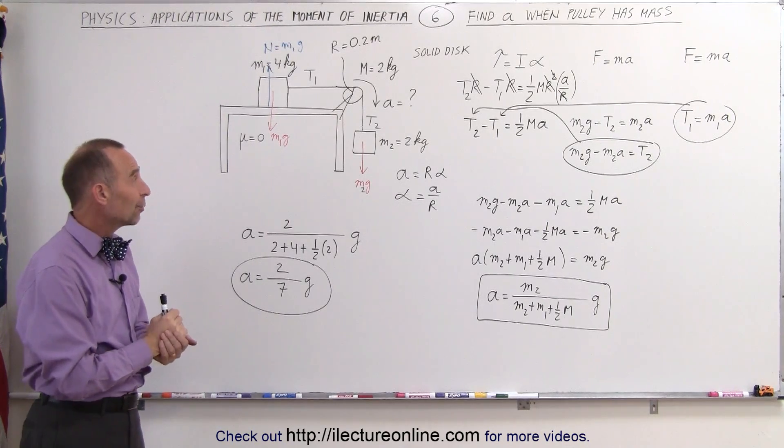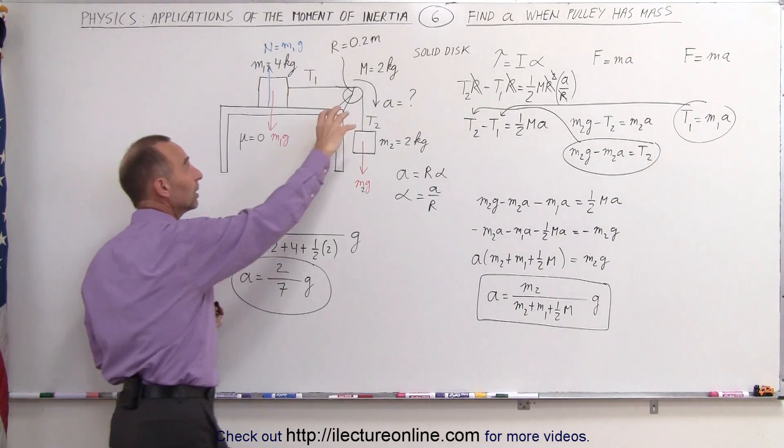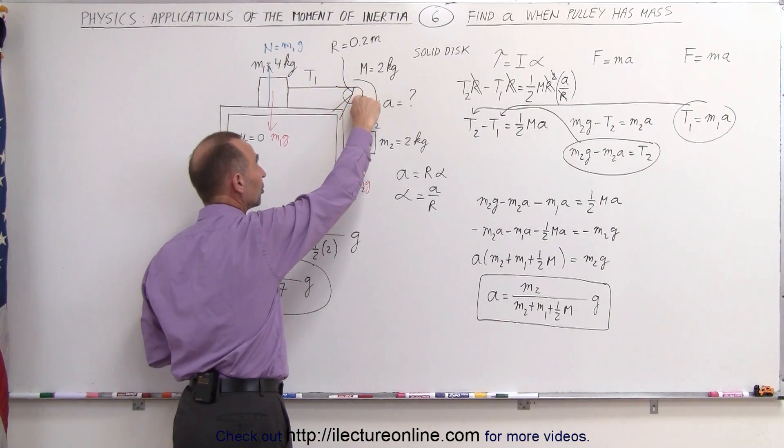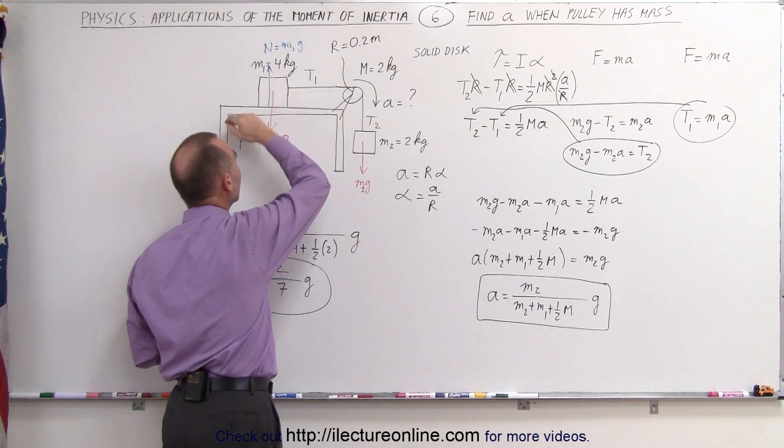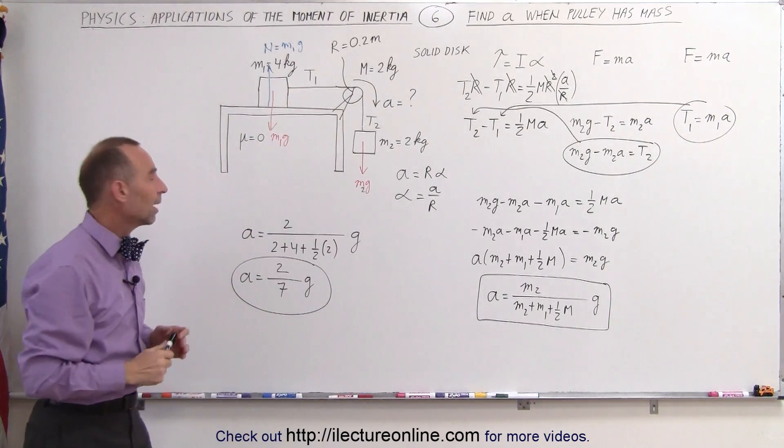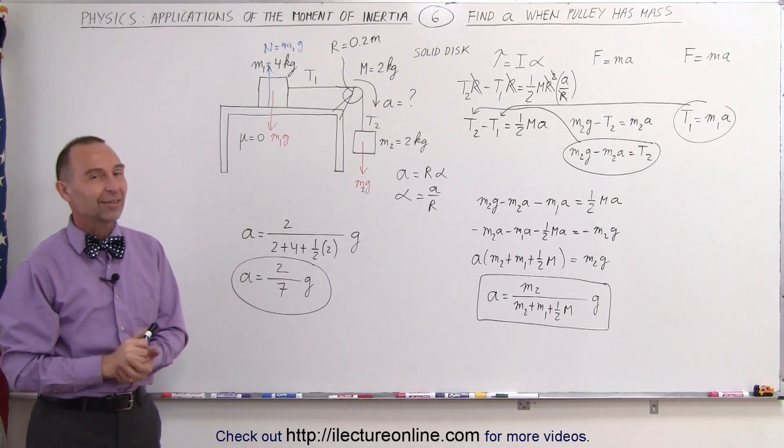And that's how we found the acceleration of a system that has a pulley that has mass, therefore a moment of inertia, in the case where the object on the table, there's no friction between that object and the table. And that's how it's done.